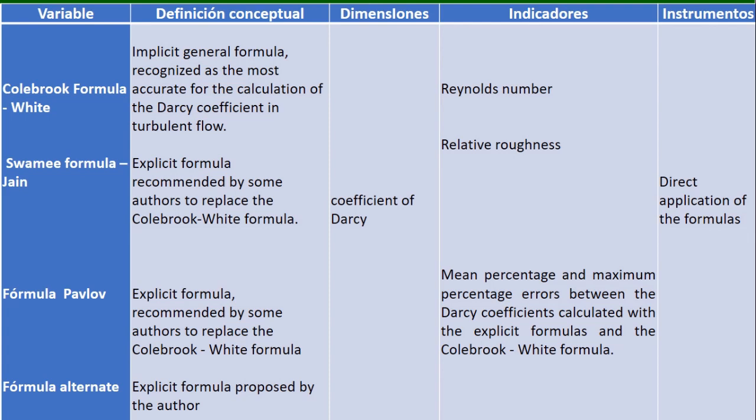To develop this comparison, the study worked with a sample of 7,000 Darcy coefficient values from each of the formulas, comparing each explicit formula with the implicit Colebrook-White formula. For each explicit formula, the mean percentage error and the maximum percentage error were obtained relative to the Colebrook-White formula. These errors were then compared with each other to determine which formula is most appropriate for calculation.